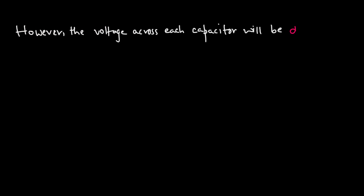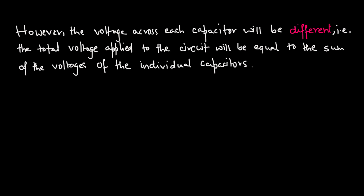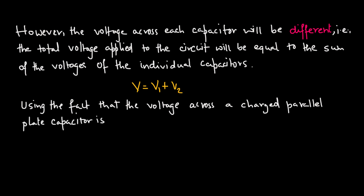However, the voltage across each capacitor will be different. That is, the total voltage applied to the circuit will be equal to the sum of the voltages of the individual capacitors: V equals the sum of voltage across C1 and C2. Using the fact that the voltage across a charged parallel plate capacitor is V equals Q over C, we get V1 equals Q over C1 and V2 equals Q over C2.